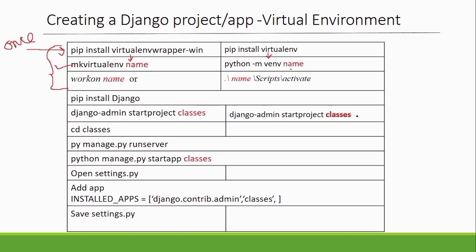The name you write in the command is the name of your virtual environment — you can give it any name you want, such as 'env' or anything else. The command is: python -m venv [name]. Anything written in red can change depending on your project.